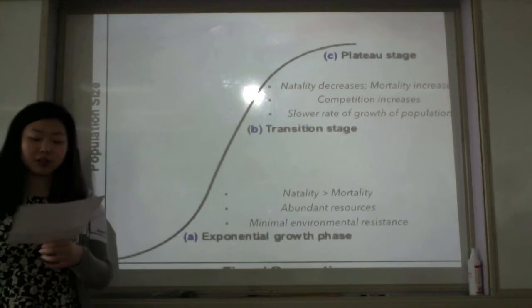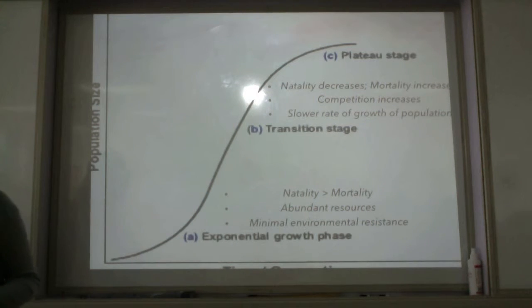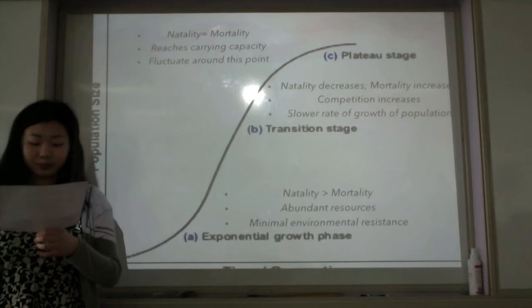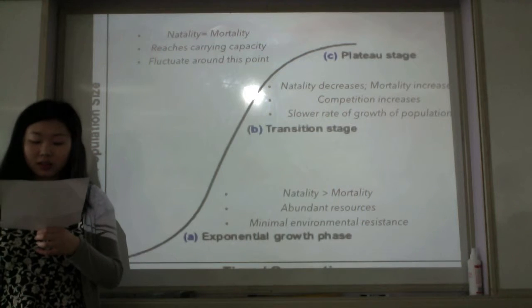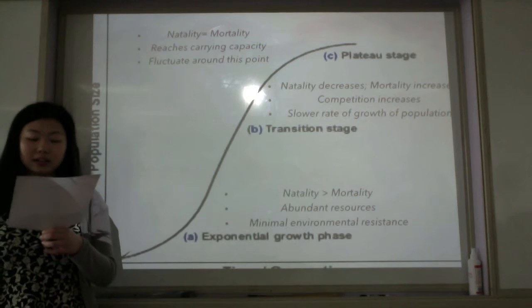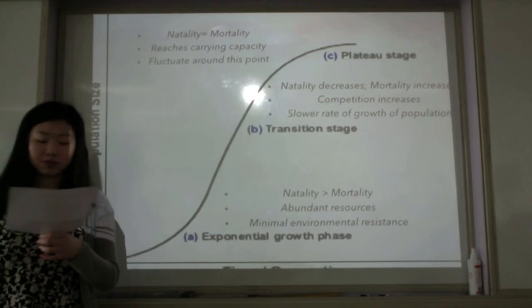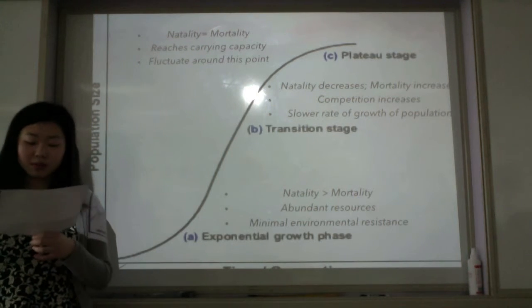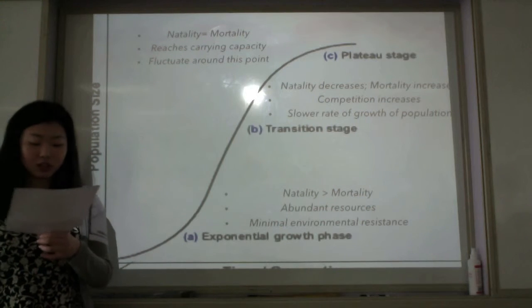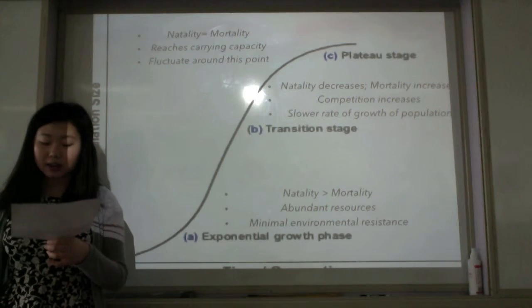Then finally comes the plateau stage. This is when the mortality rate equals the natality rate and population size becomes constant, reaching the carrying capacity of the environment. Limited resources, disease, and competition each have roles in keeping the population size balanced at this level.